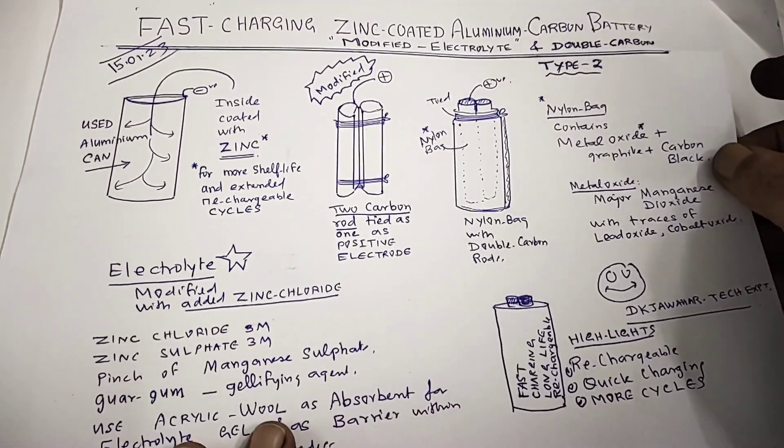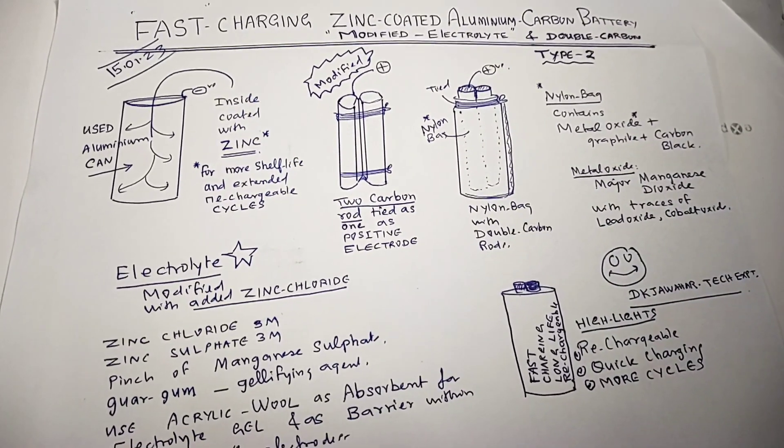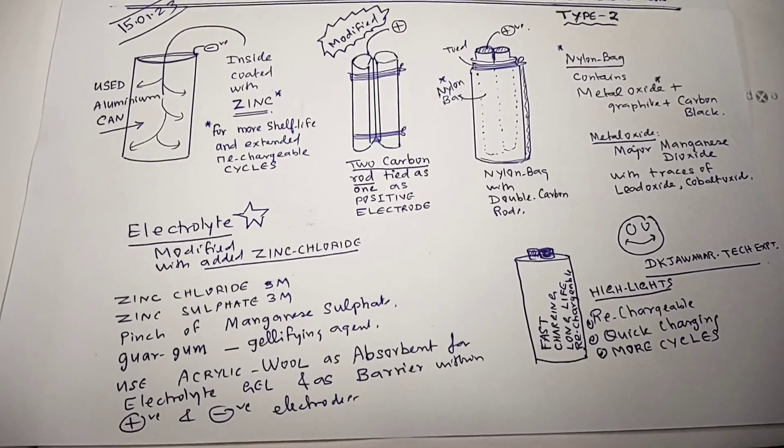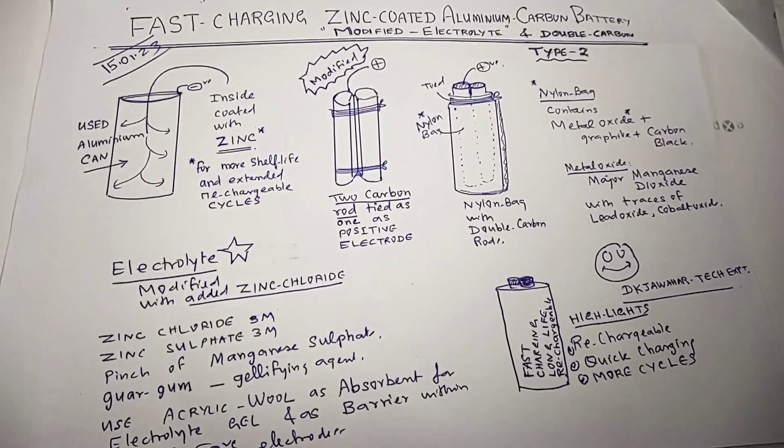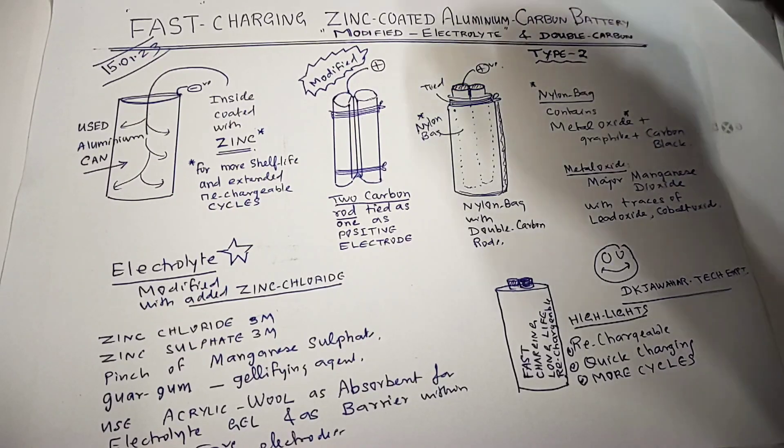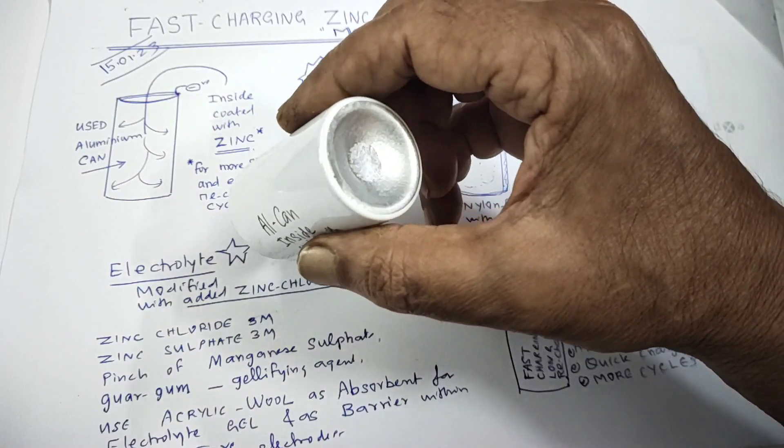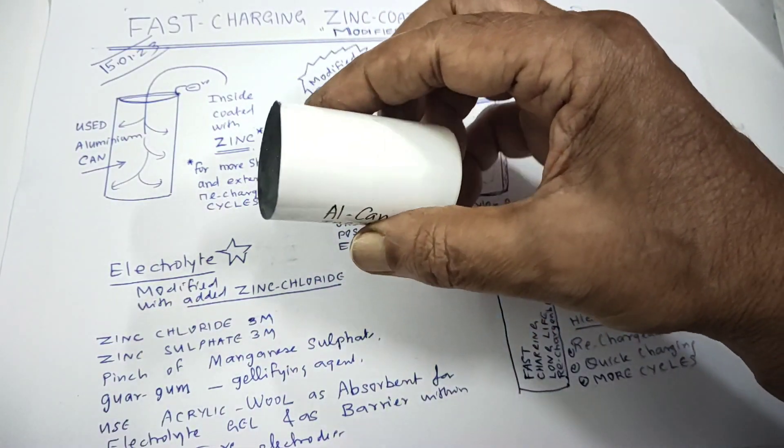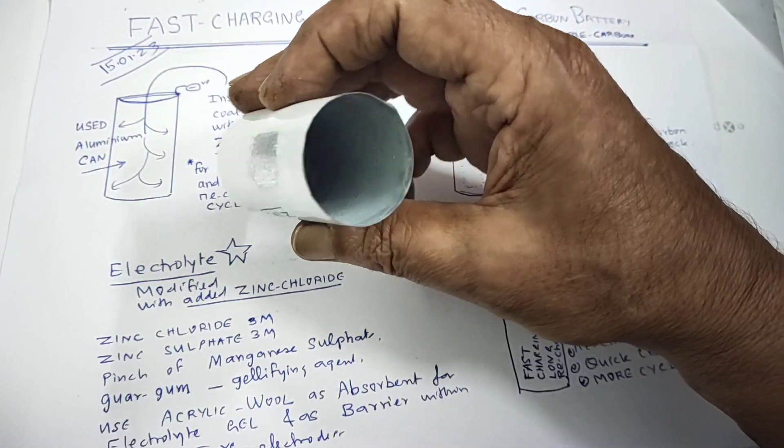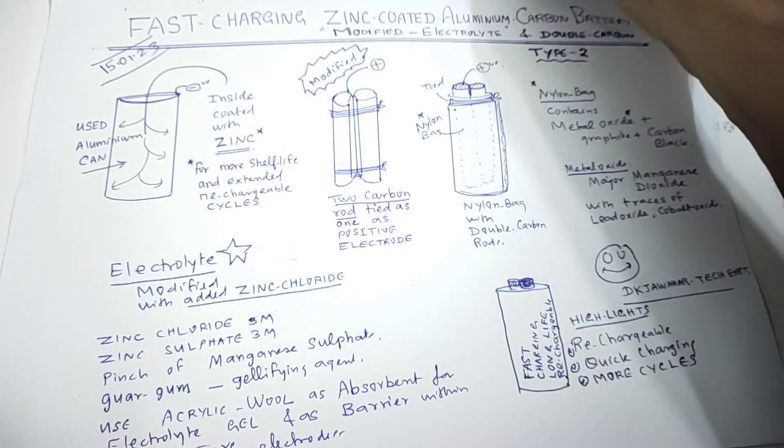This is the procedure and steps we are going to take to prepare this zinc coated aluminum carbon batteries with modified electrolyte. Same I will be using any spray cans, I am going to cut this spray cans and I coated well with zinc you can see inside, zinc is being coated for more shelf life that is why.